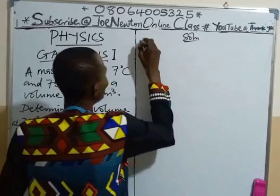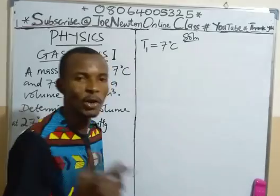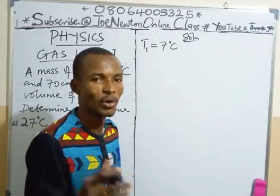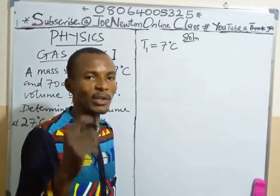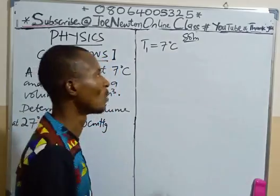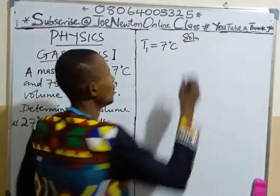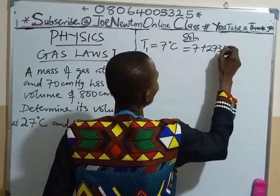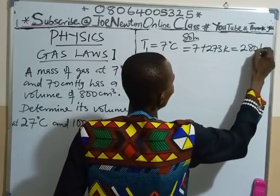We are given that T1, our initial temperature, is 7 degrees Celsius. But we are not going to work with Celsius — when temperature is given in degrees Celsius in gas law problems, we convert to Kelvin. Remember that 0 degrees Celsius is equivalent to 273 Kelvin, so we add 273 to whatever value we have in Celsius. So T1 equals 7 plus 273, giving us 280 Kelvin.